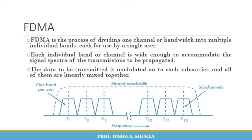Initially, one TV station or channel used a single 6 MHz band. But with digital techniques, multiple TV channels may share a single band today.